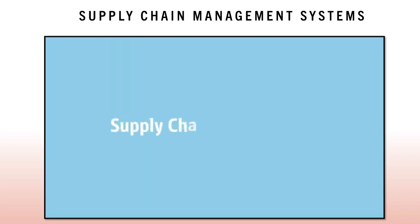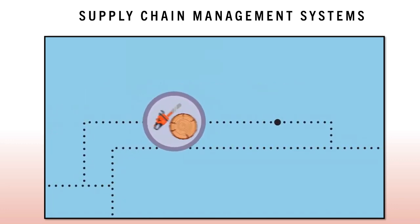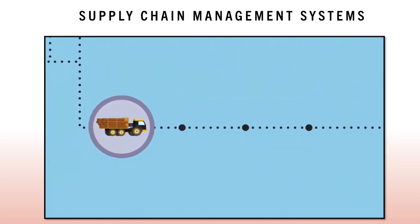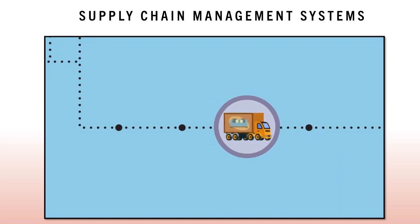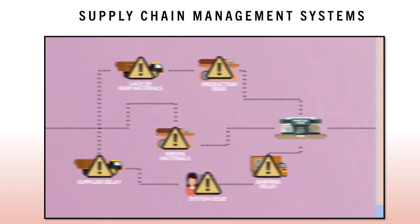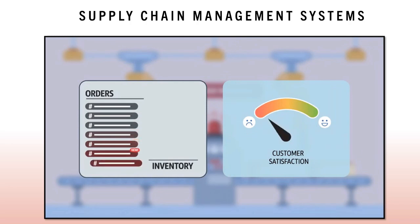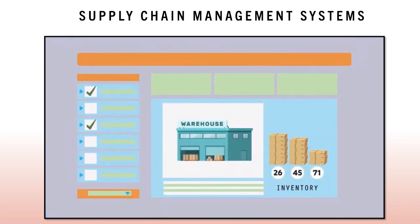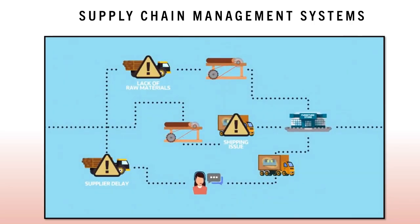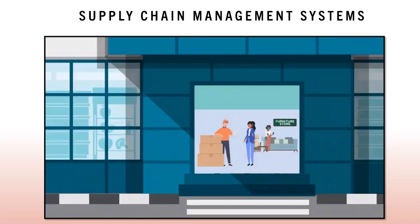Supply Chain Management, or SCM, involves the planning and execution of processes required to convert raw materials into finished goods, including the procurement of materials, production, fulfillment and support. The strains on the supply chain are many, and when not properly managed, can cripple a business, leaving it unable to produce goods or fulfill customer orders. Effective supply chain management provides visibility into inventory levels and detects potential disruptions along the supply chain, helping businesses meet demand, fulfill orders at the lowest cost possible, and deliver a positive customer experience.